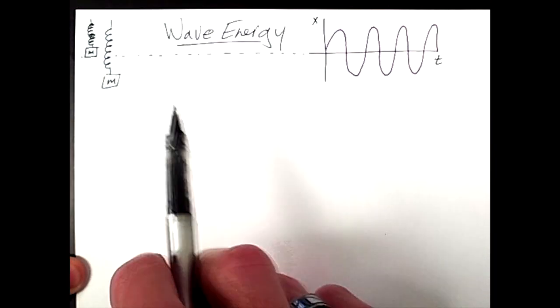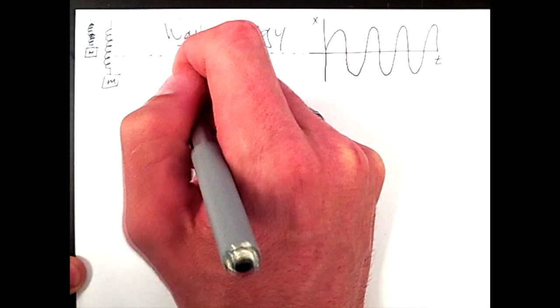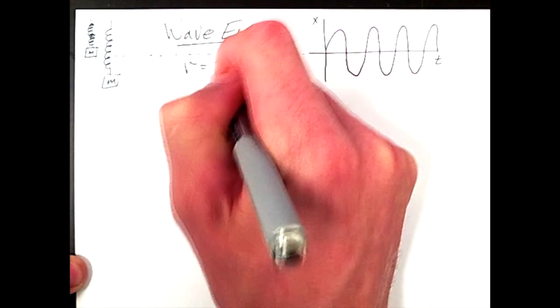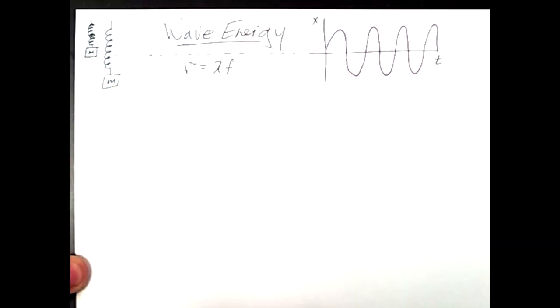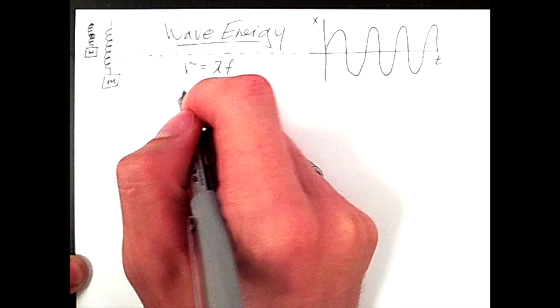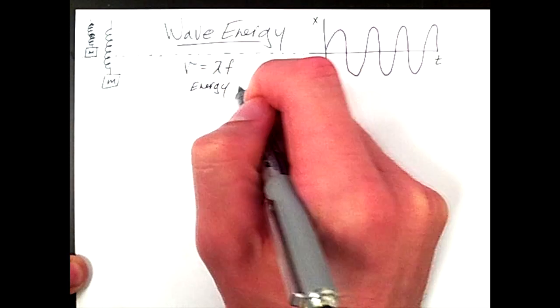However, when we discussed simple motion of waves, we came up with a formula that described the speed of a wave as being lambda times f. This, however, describes the motion of the energy propagating through the system.